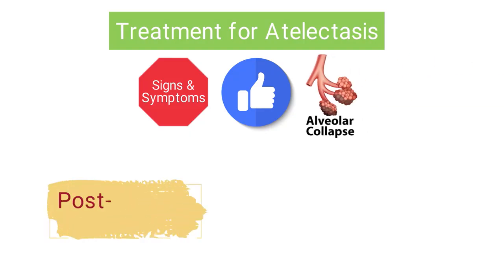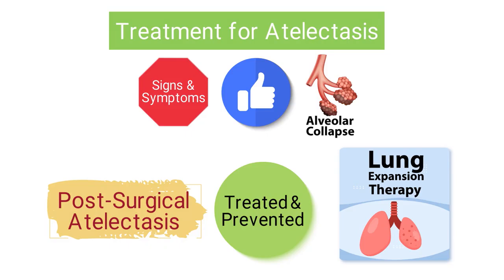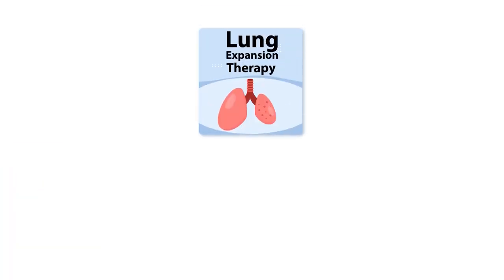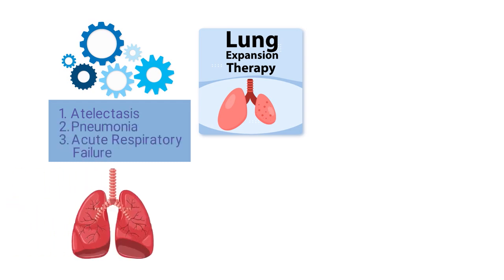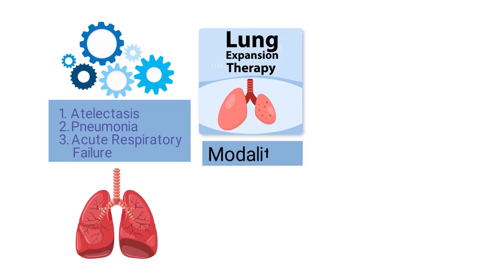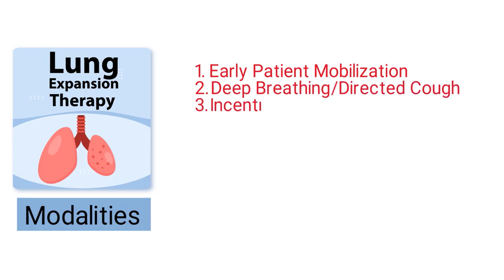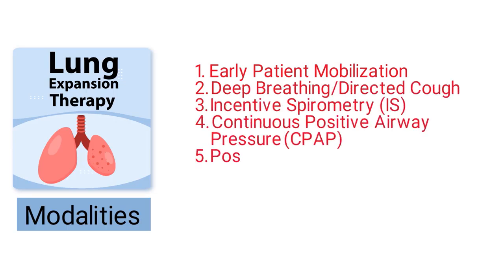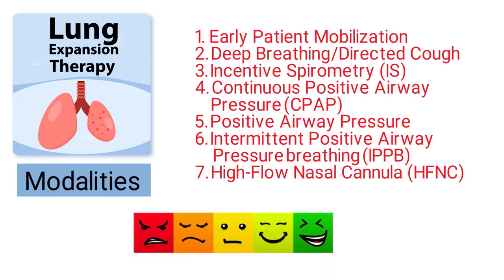In general, post-surgical atelectasis can be treated and prevented with different types of lung expansion therapy. As previously mentioned, lung expansion therapy involves several respiratory care procedures designed to treat atelectasis, pneumonia, acute respiratory failure, and other conditions of the lungs. The modalities that can be used include early patient mobilization, deep breathing and directed cough, incentive spirometry, CPAP, positive airway pressure, IPPB, and a high flow nasal cannula. The techniques used will be based on the individual patient's needs and the severity of their condition.